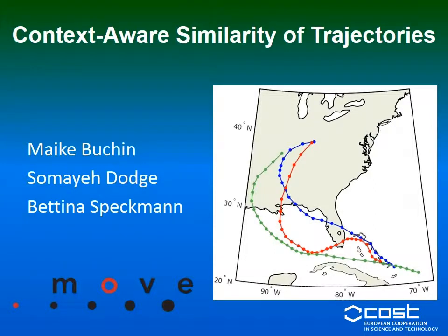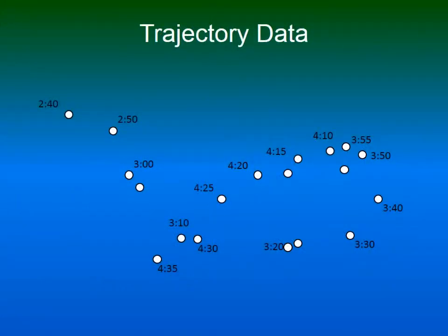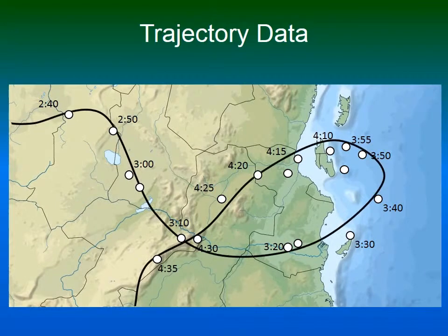We propose and demonstrate an approach for measuring the similarity of two trajectories taking into account their geographic context. Nowadays an increasing amount of trajectory data is being collected. A trajectory is a sequence of geographic locations of a moving entity sampled over time. Such a trajectory is not sampled in an empty space, but in a geographic space. The geographic context greatly influences the movement.